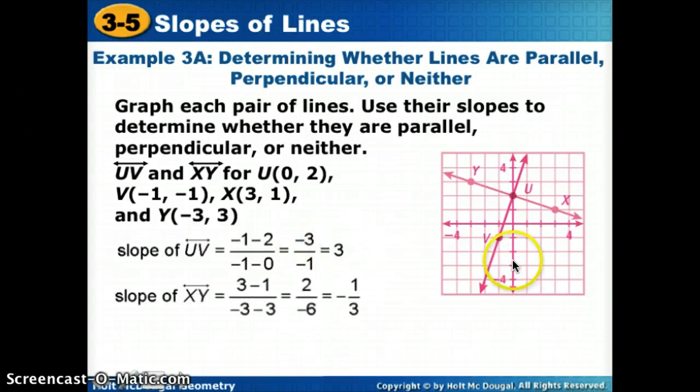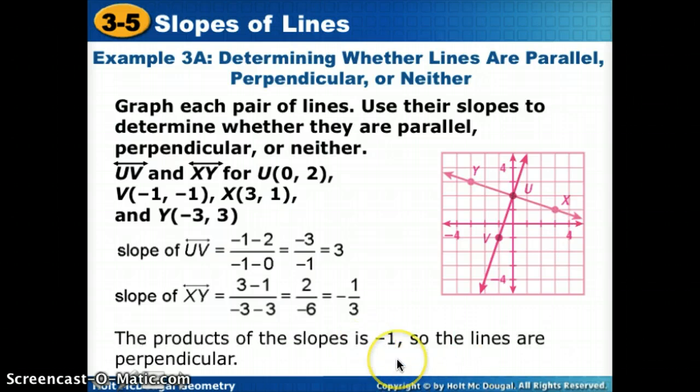Now when I look at the slope of XY, I could count and see that I go down 2 over 6, which gives me a negative 1 third. Now notice these two slopes, 3 is like 3 over 1. If I multiply 3 times negative 1 third, 3 times a third would give me 1 and a positive times a negative will give me a negative 1. So the product of those two numbers is negative 1 or you could say that these two slopes are opposite reciprocals. So those two lines are perpendicular.